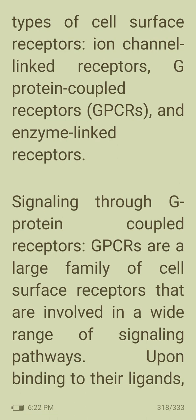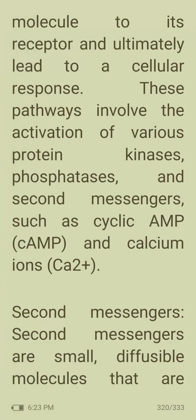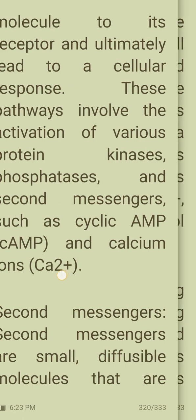G protein-coupled receptors (GPCRs) are a large family of cell surface receptors involved in a wide variety of signaling pathways. Upon binding to a ligand, GPCRs activate heterotrimeric G proteins, which then activate downstream effector proteins such as enzymes or ion channels, leading to the generation of second messengers. Signal transduction pathways are a series of biochemical reactions initiated by the binding of a signaling molecule to its receptor, ultimately leading to a cellular response.